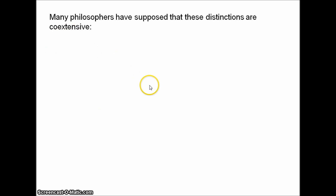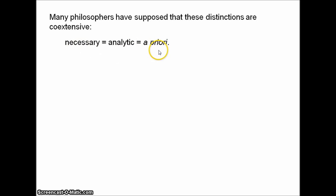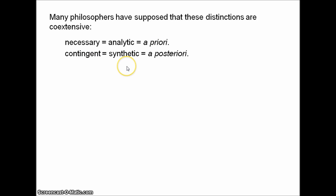So those are the three distinctions. You'll note that in explicating these distinctions, I used similar or the same examples for each one — this was no accident. Many philosophers have supposed that these three distinctions are coextensive, meaning each distinction divides propositions in the same way. The necessary propositions are the analytic propositions are the a priori propositions, and the contingent propositions are the synthetic propositions are the a posteriori propositions.